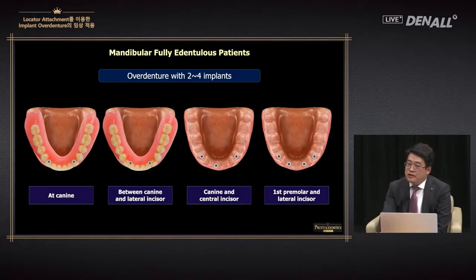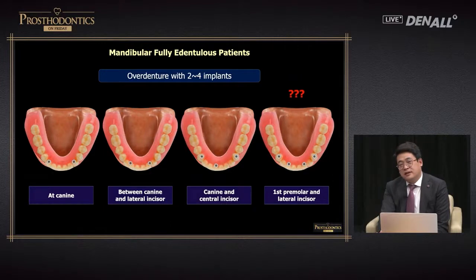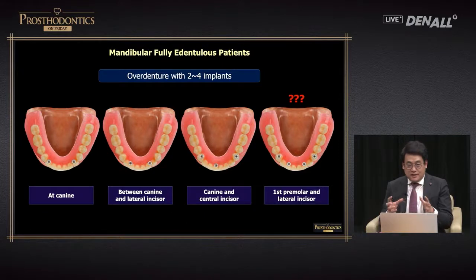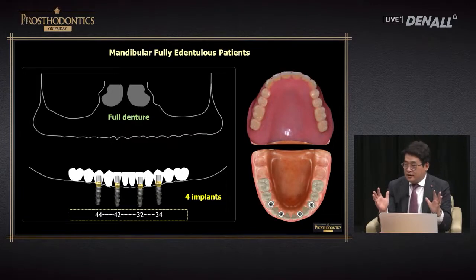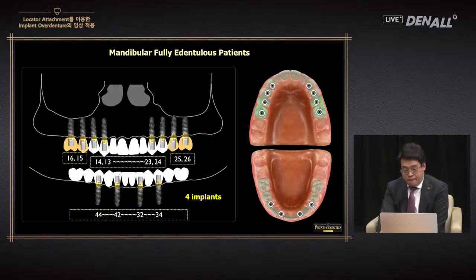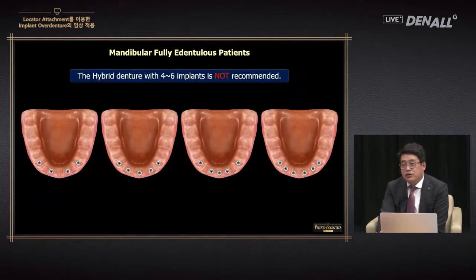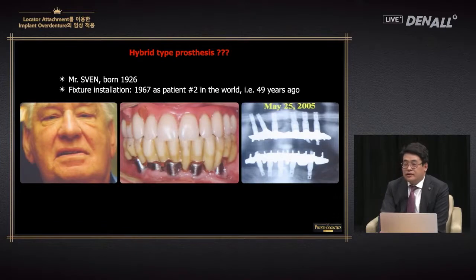At times four implants are placed for overdenture. These days the so-called all-on-X approach — placing a couple of implants and doing a cantilever pontic — is used by some. However, personally I don't like this type. Placing about six implants and providing a hybrid prosthesis means that during follow-up there are so many maintenance problems. I believe it is better to do overdenture or provide fixed prosthesis. Fractures and dislocations are a common problem with fixed prosthesis in the lower.